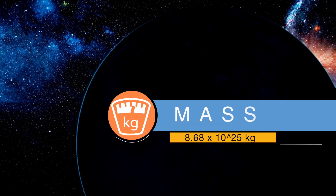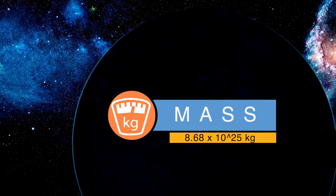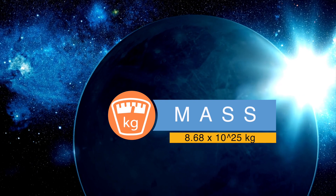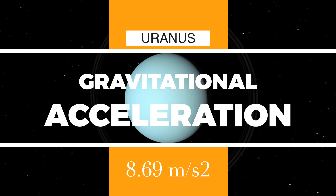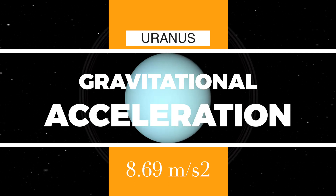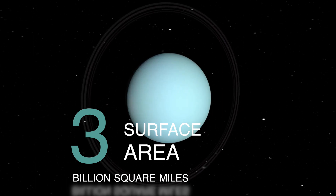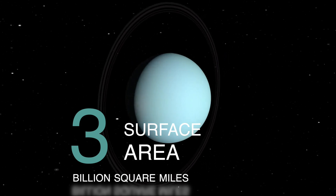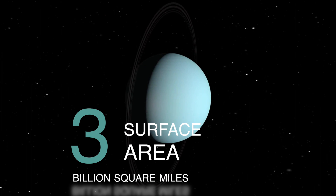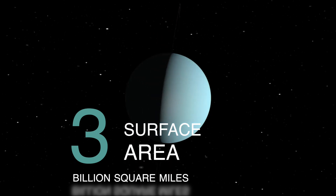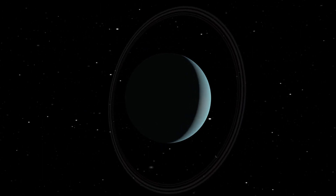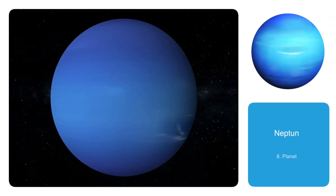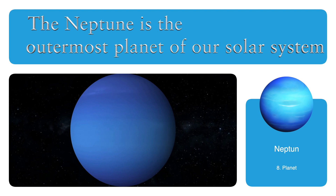Uranus has a mass of approximately 87 septillion kg, which is around 14.5 times the mass of Earth. Its surface gravity is 8.69 meters per second squared, about 0.9 times that of Earth. Its total surface area is approximately 3 billion square miles, about 15 times that of Earth. However, like Jupiter, Uranus is a gas giant with no well-defined surface.